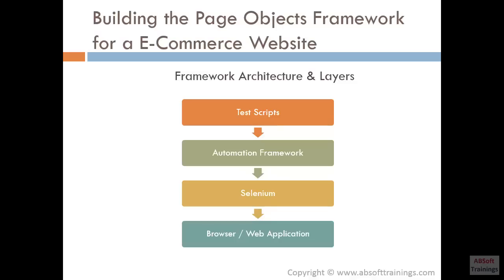Let's build the Page Objects Framework for our e-commerce test website. Before starting, we should define proper framework architecture and layers for a very effective automation framework. It is always a good practice to have the architecture defined in advance. What we are seeing here is one of the most widely used framework architectures. In this architecture, we have four layers: the test scripts layer, the automation framework layer, the Selenium layer, and the browser or web application layer.